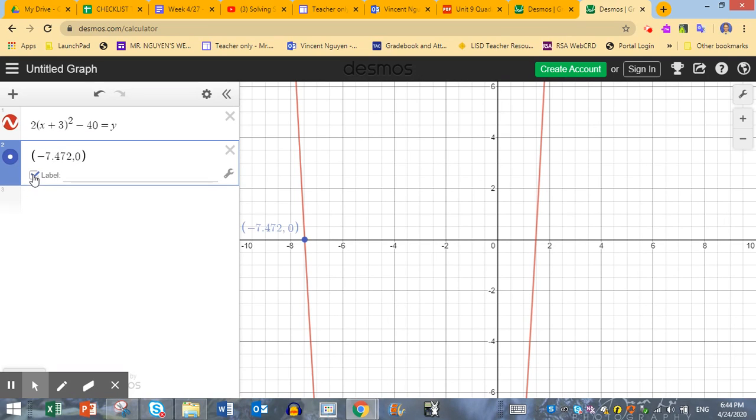And you can actually label that, and you can say root or solution 1, or you can say 0, 1, or root 1, if you want. You can say x equals negative 7.472. So that's one answer.